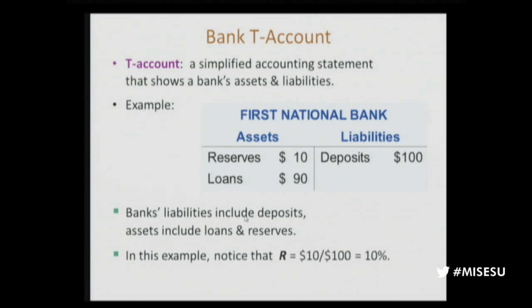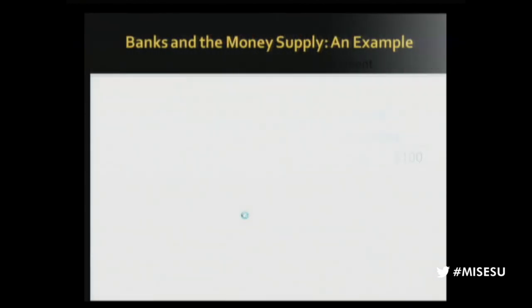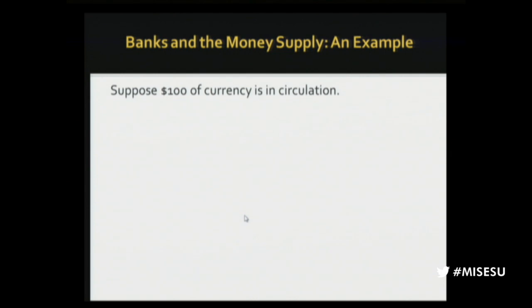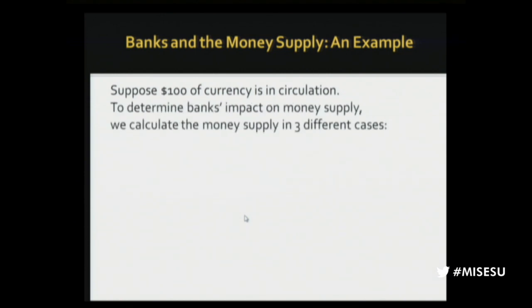In this example, notice that R, the reserves, represent exactly 10% of deposits. The rest of that deposited money is loaned out. Suppose there's $100 of currency in circulation in this economy and we want to determine the bank's impact on the money supply. We're going to look at three different cases.